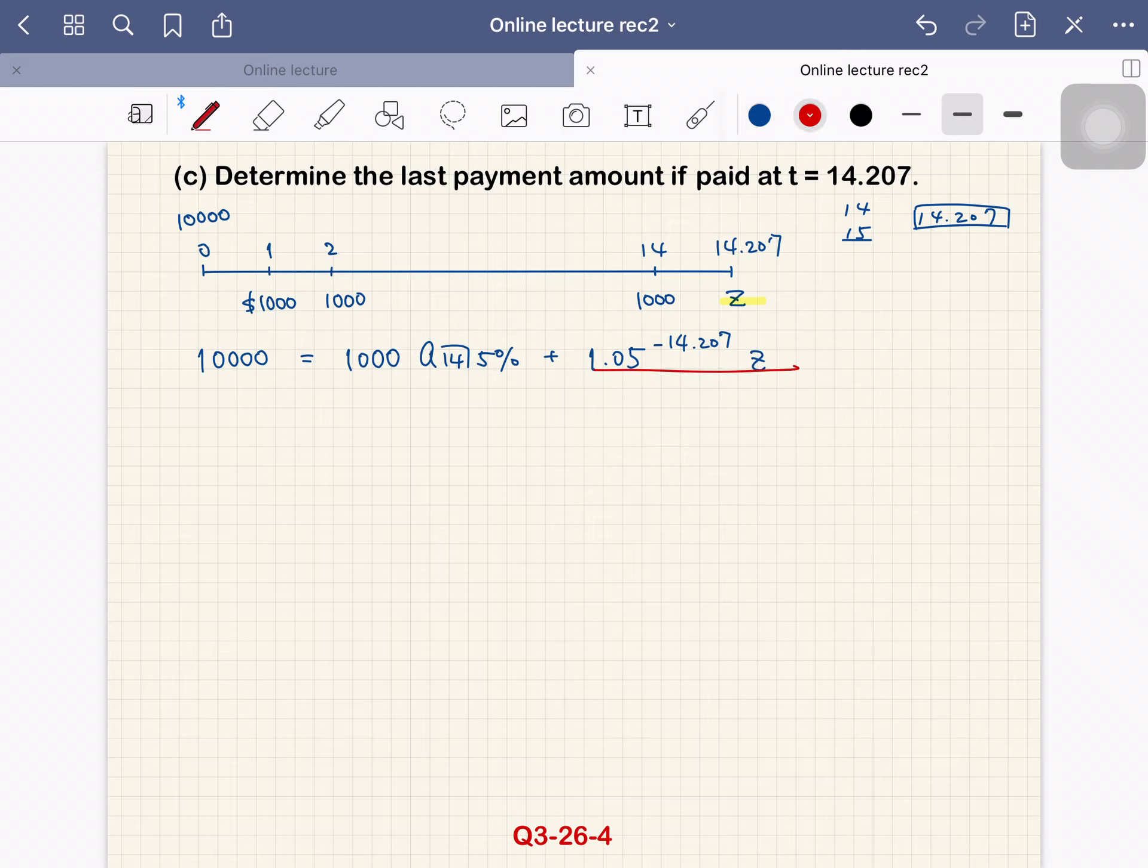So this is PV of Z. If we simplify this, Z equals 1.05 to the power 14.207 times $10,000 minus $1,000 A angle 14 at 5%.